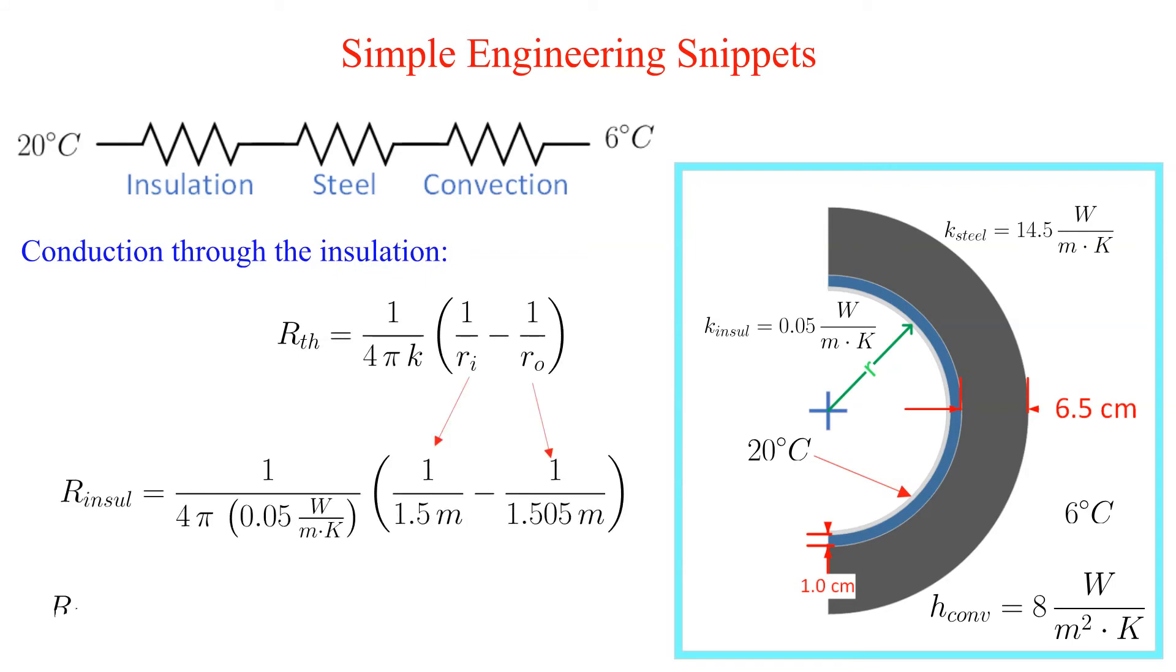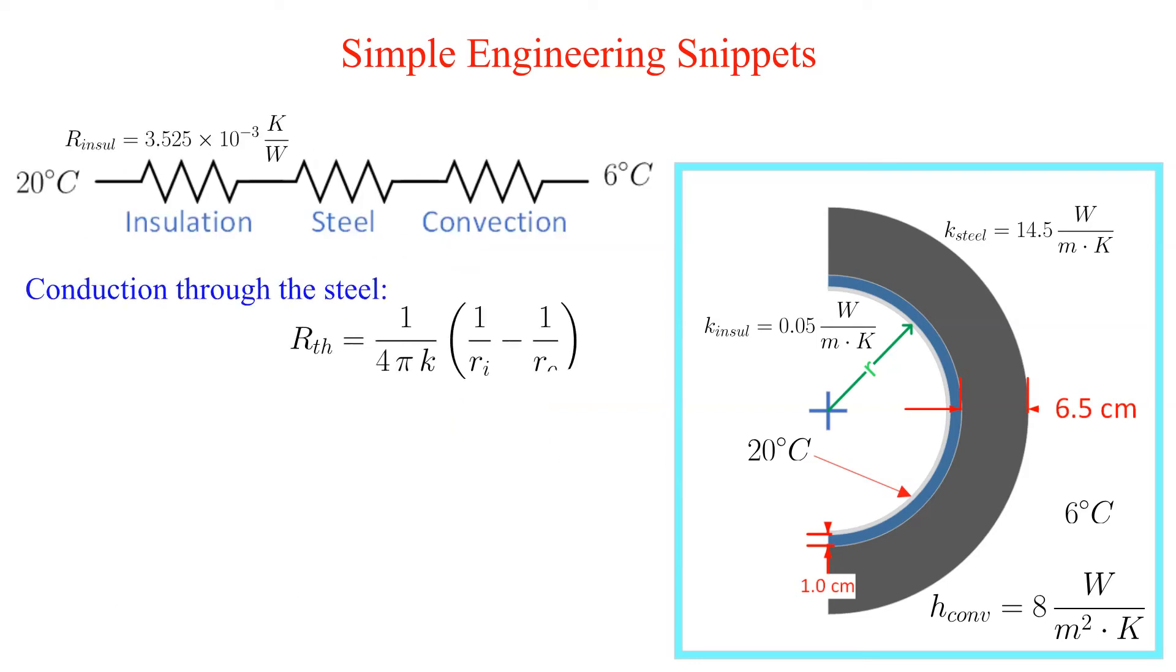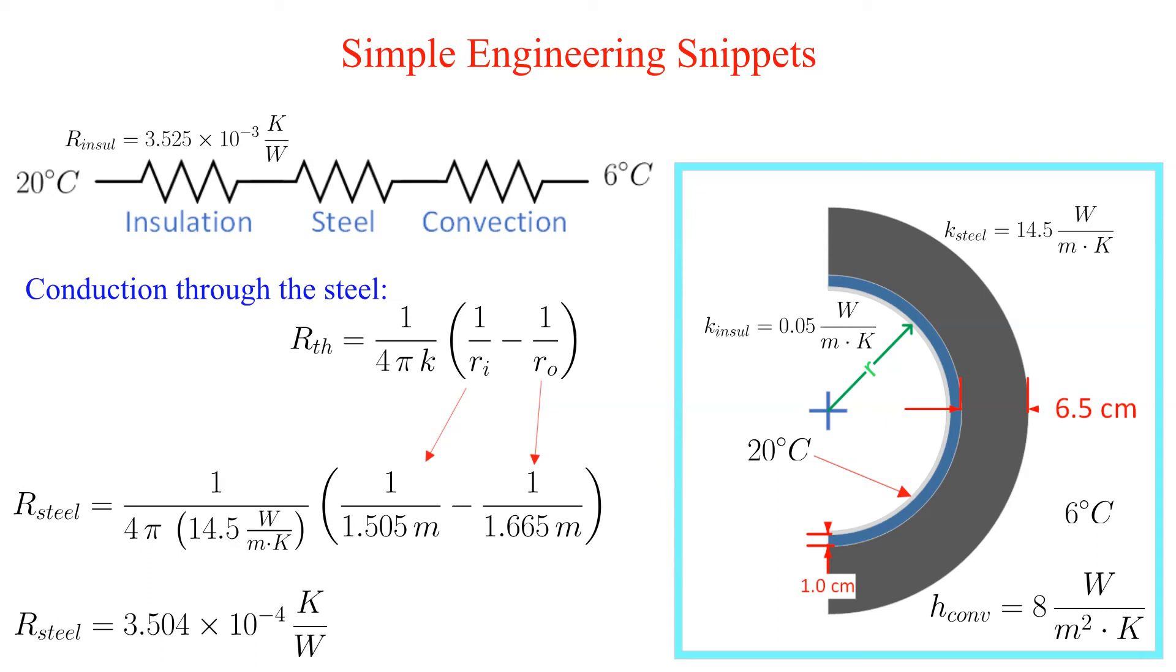We start with the insulation. Now we do the same for the steel layer. Note that even though the thickness of the steel is 6.5 times thicker than the insulation, the resistance is an order of magnitude less than the insulation resistance. This is due to the higher conductivity of the steel.